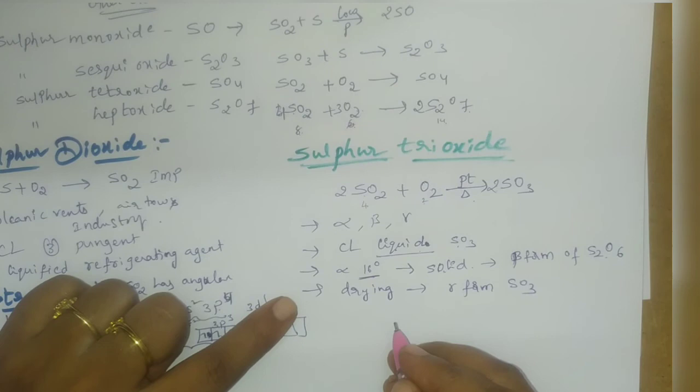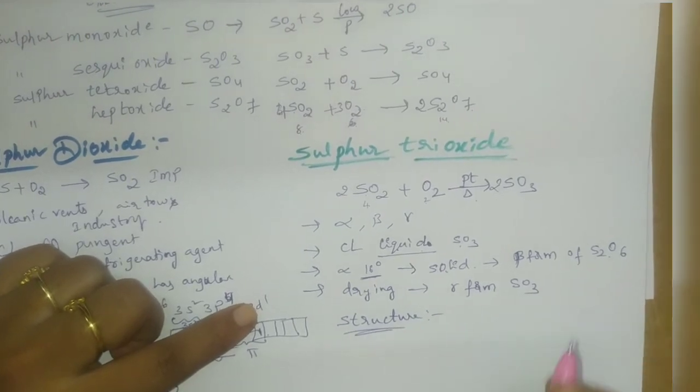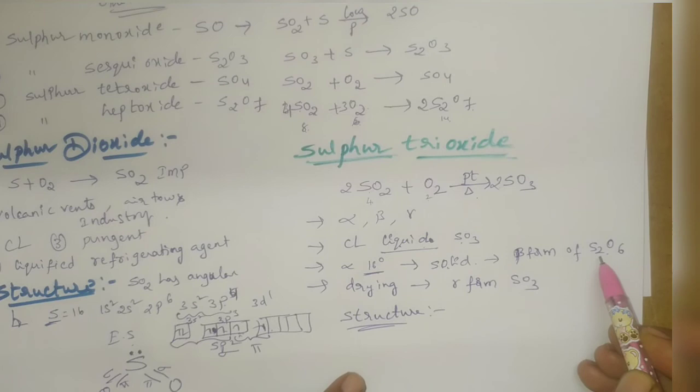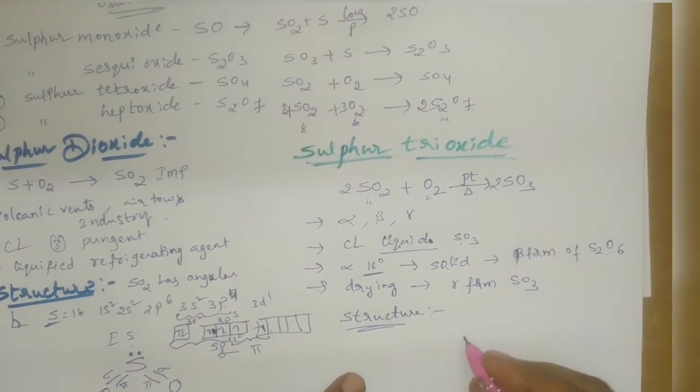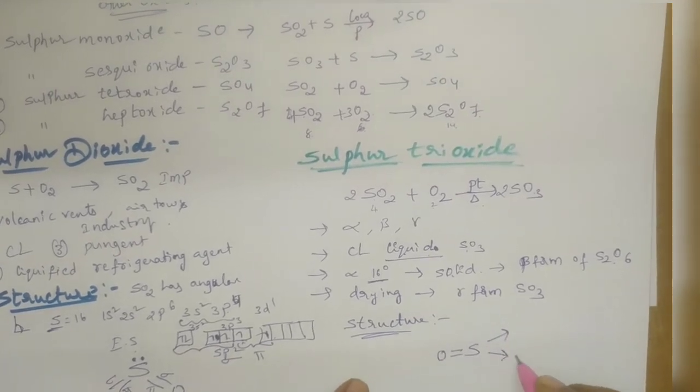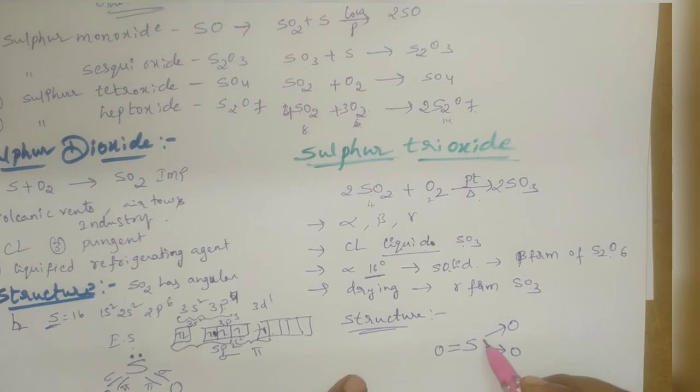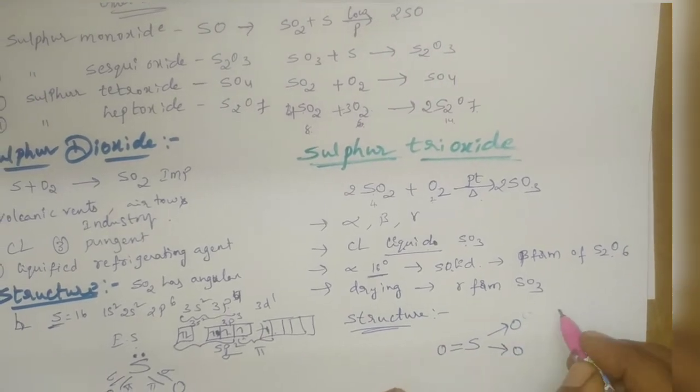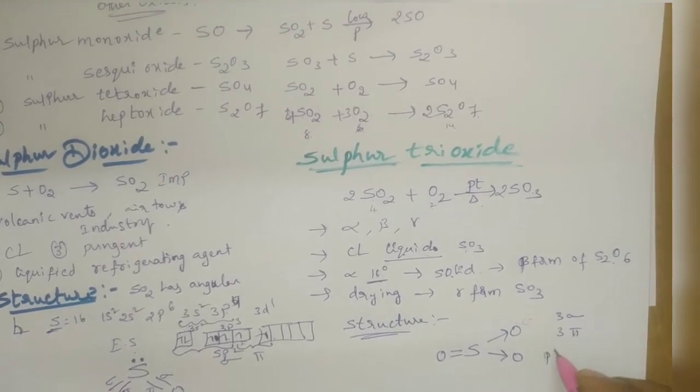In this one, the structure is similar to SO2. Sulfur forms bonds, but here SO3 has three oxygens and one sulfur. The structure will be formed with single electron negative charges. Similar structures will be formed. Here three sigma bonds and three pi bonds will be formed. It is a planar structure.